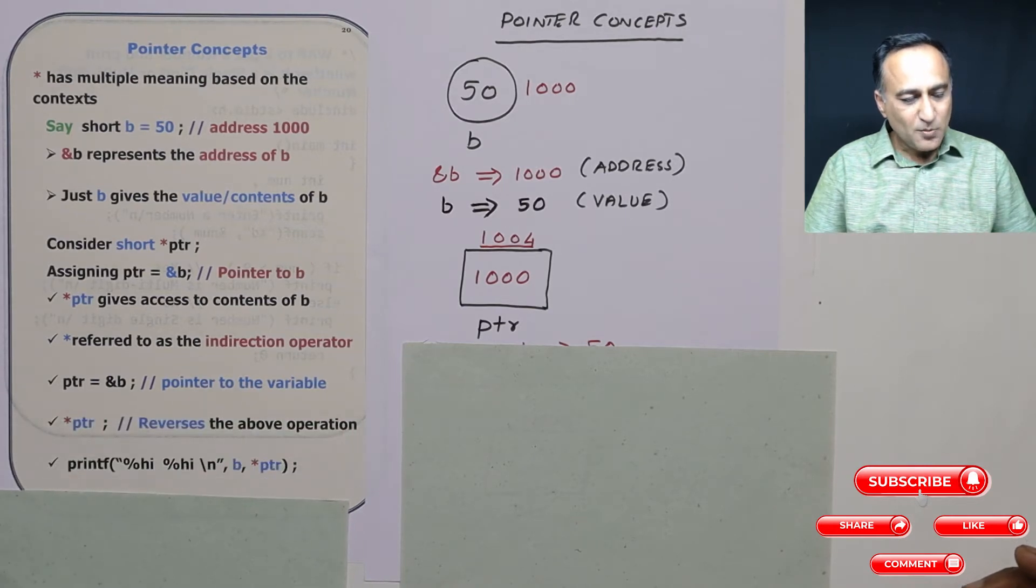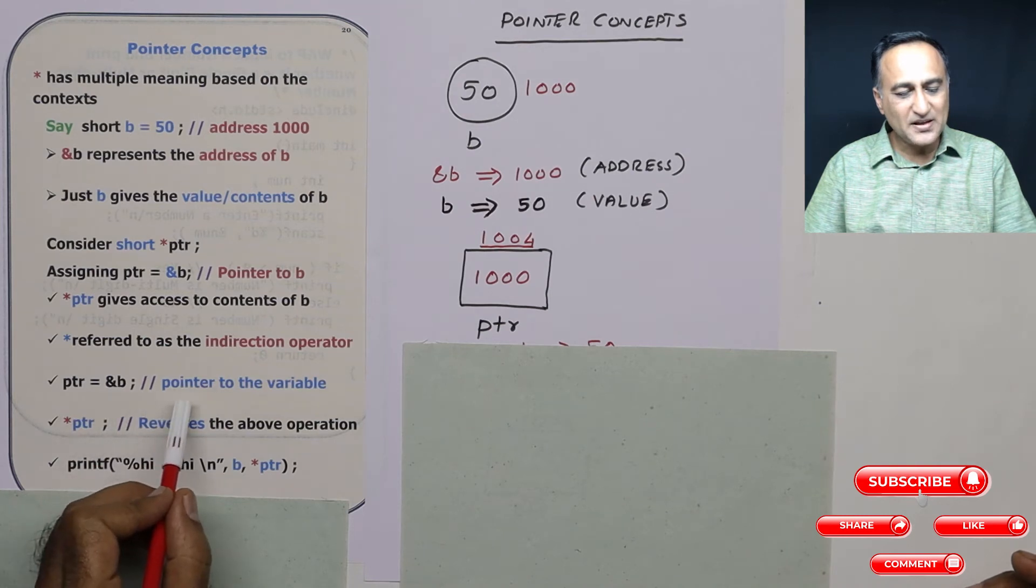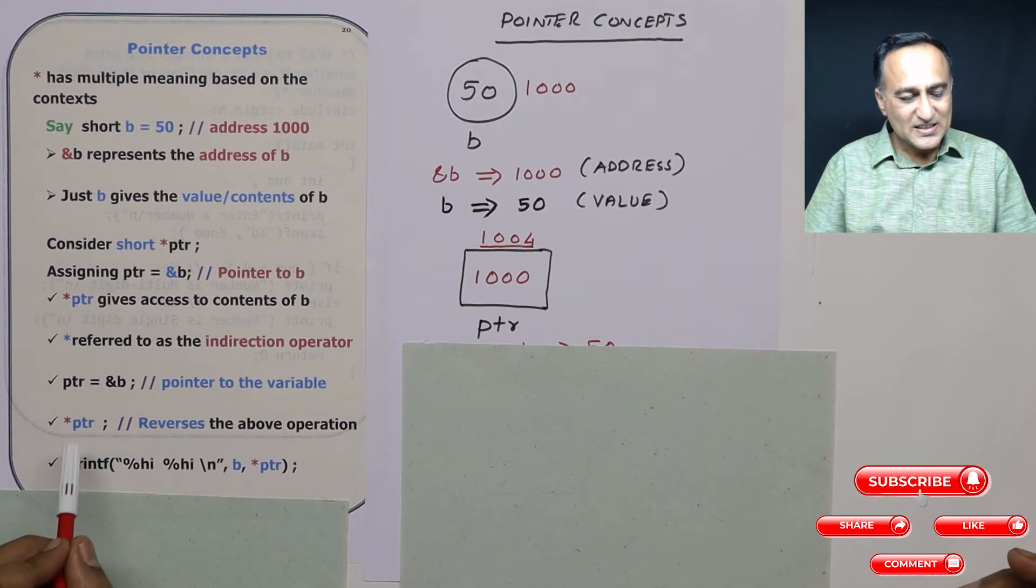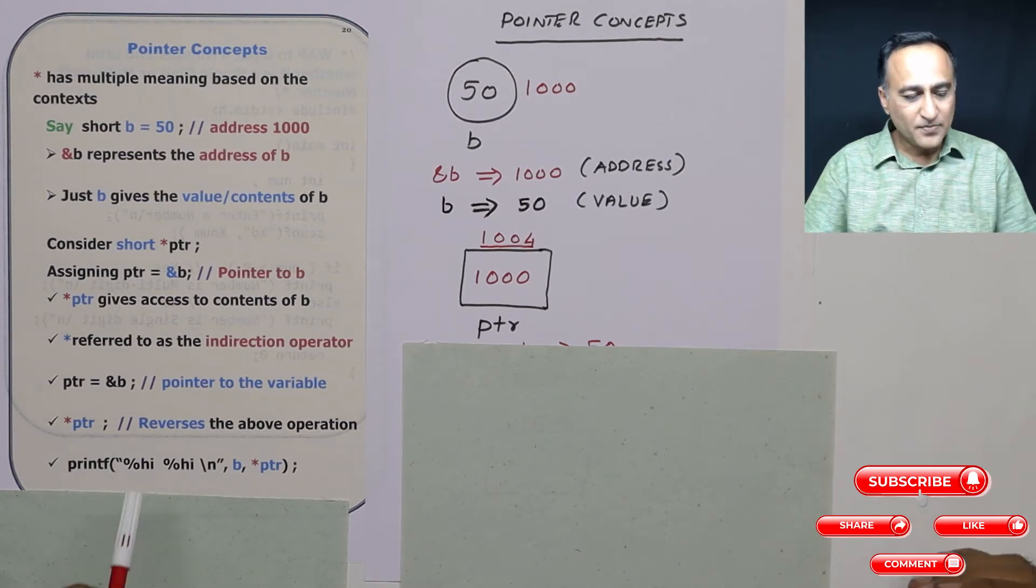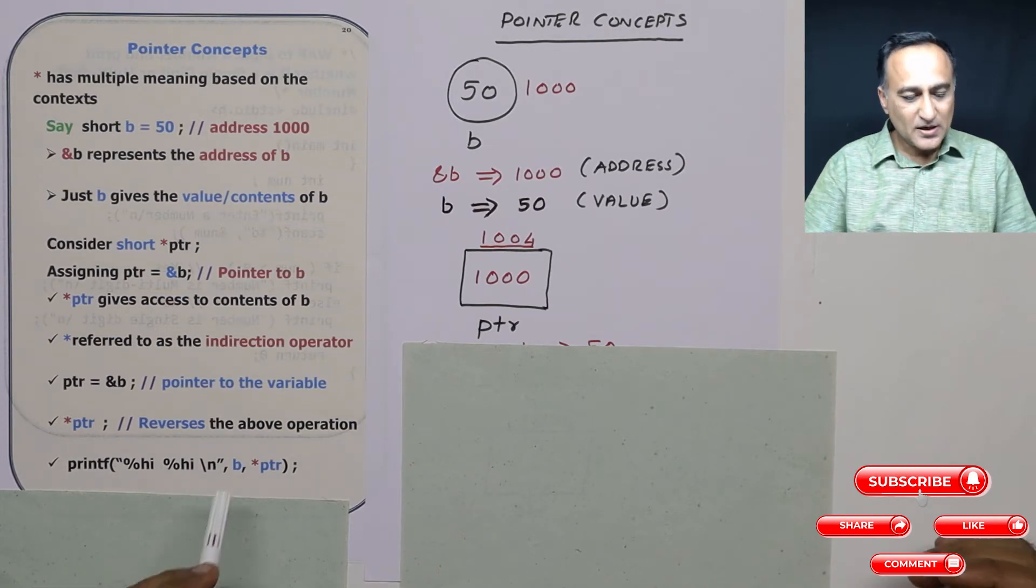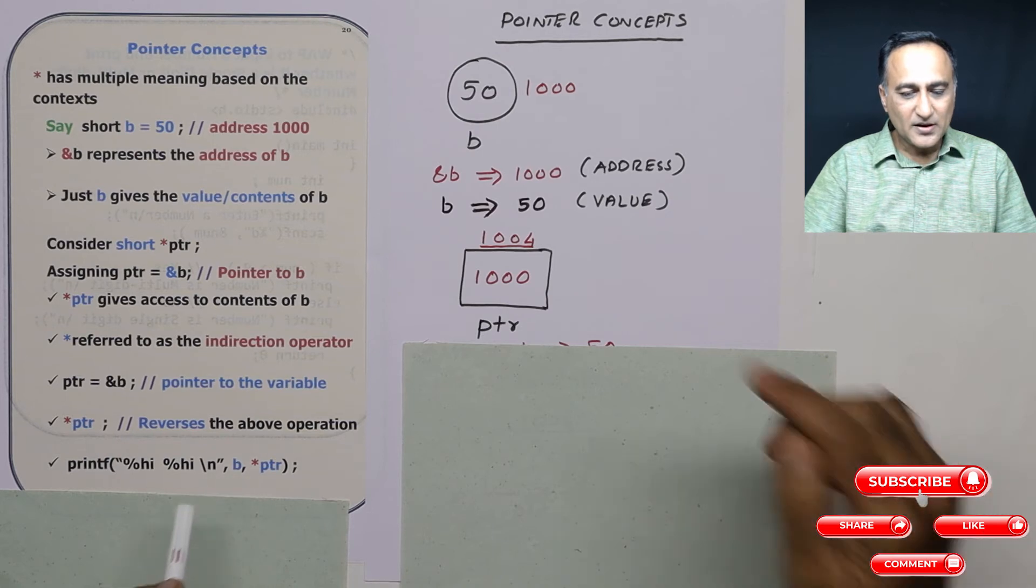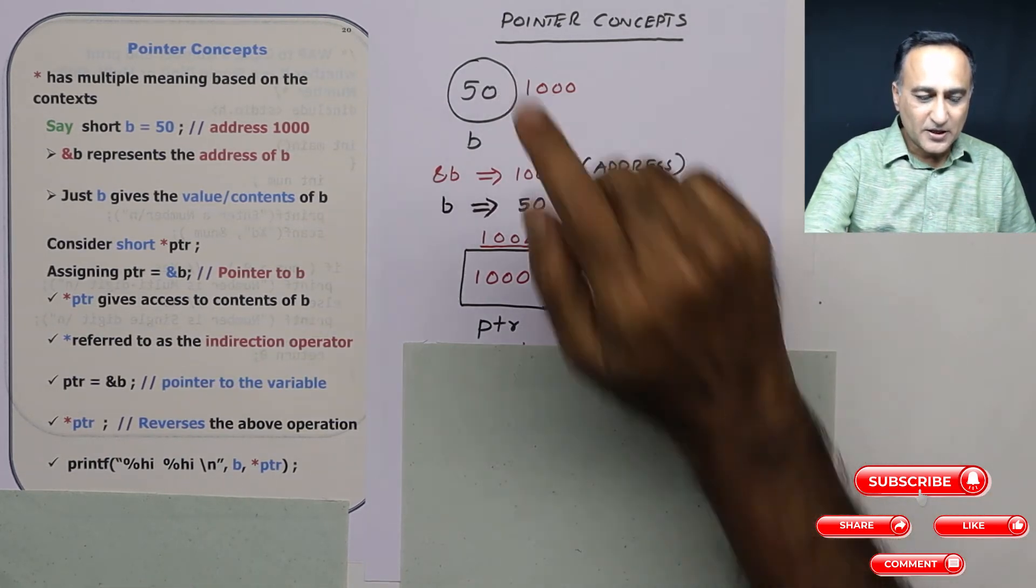Now the moral of the story is if I say ptr is equal to address of b, I say ptr is a pointer to a variable of the type short. Star ptr gives you what is the value or content of b. Ptr simply gives you the address of b. So b will print 50 this way or I can print star ptr and it will still print 50.